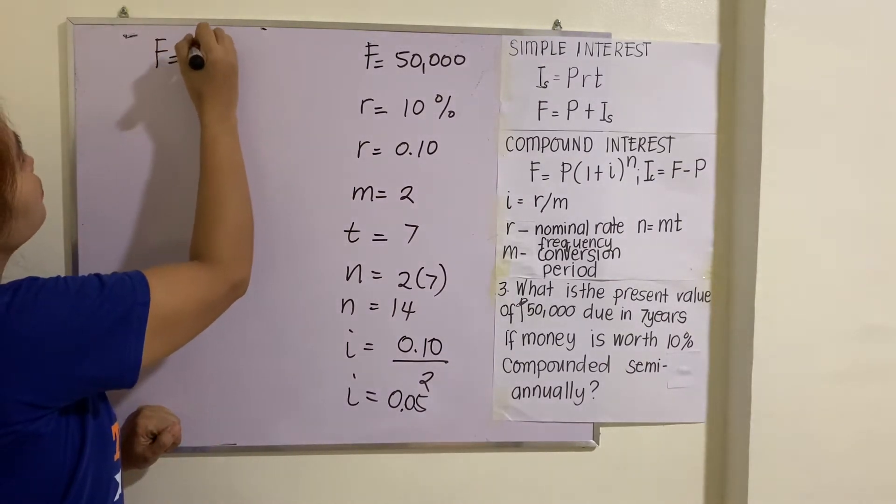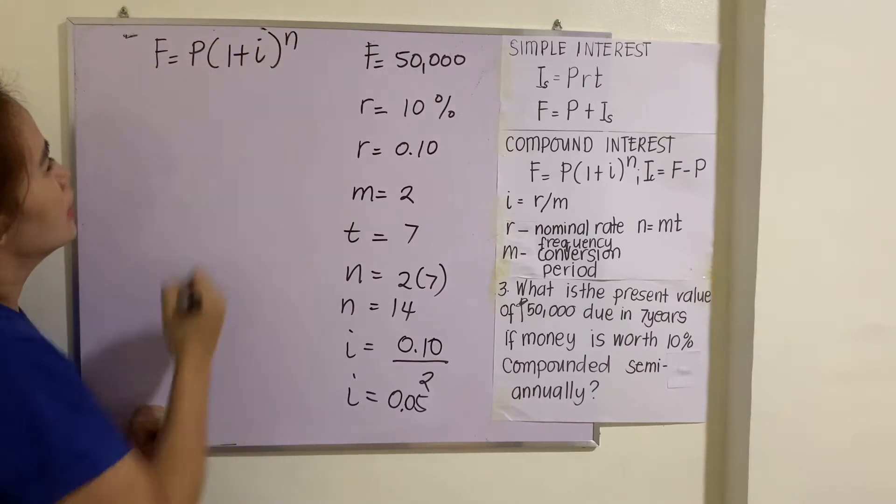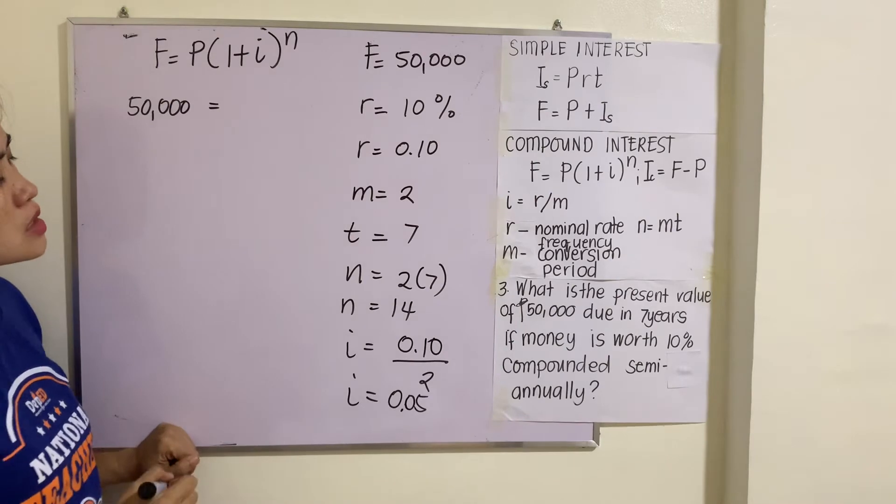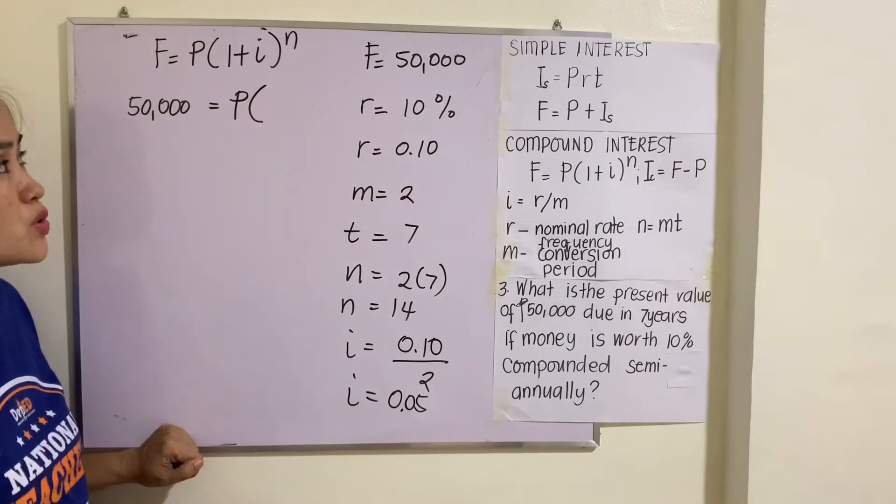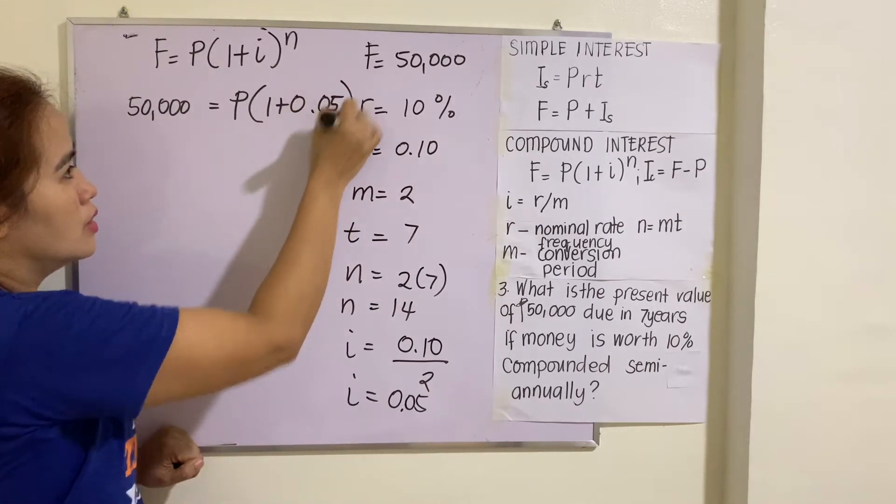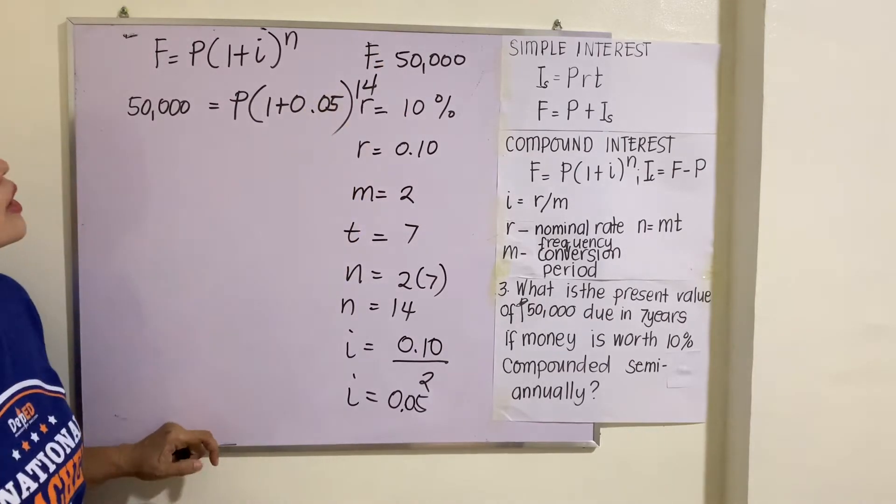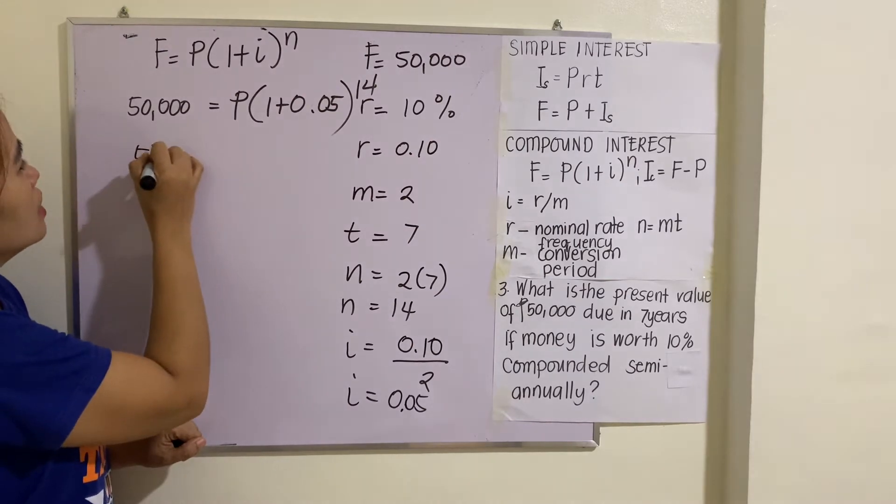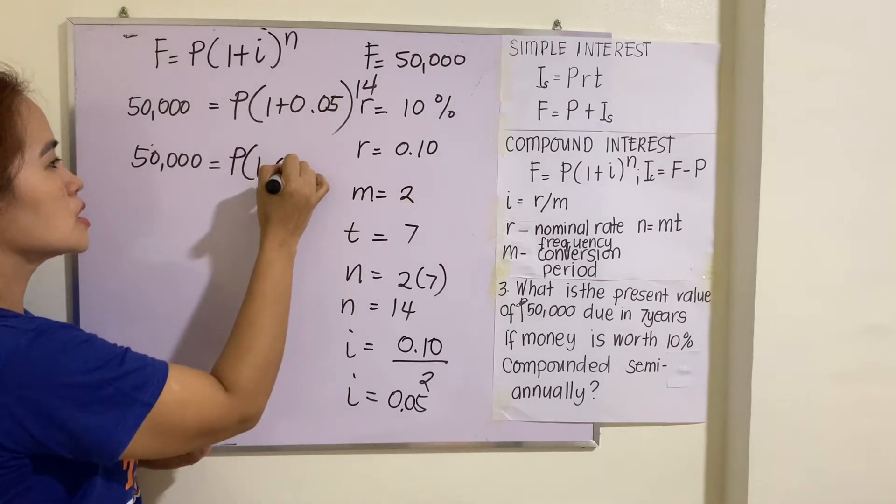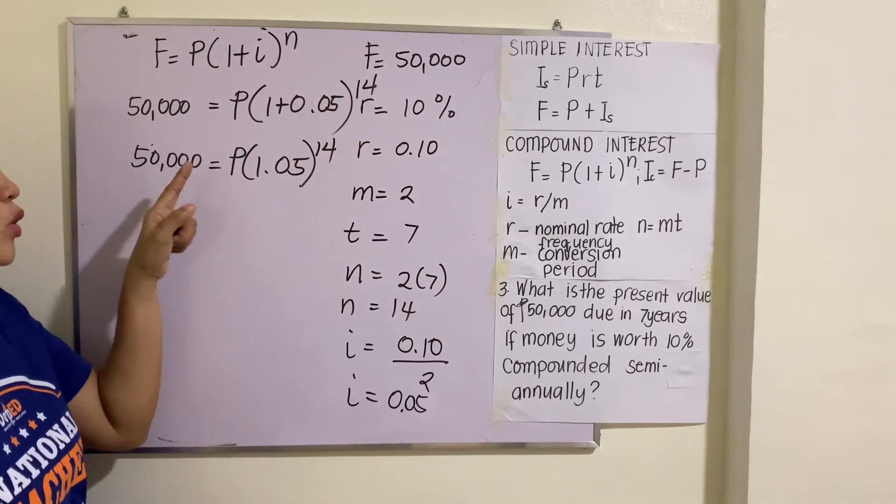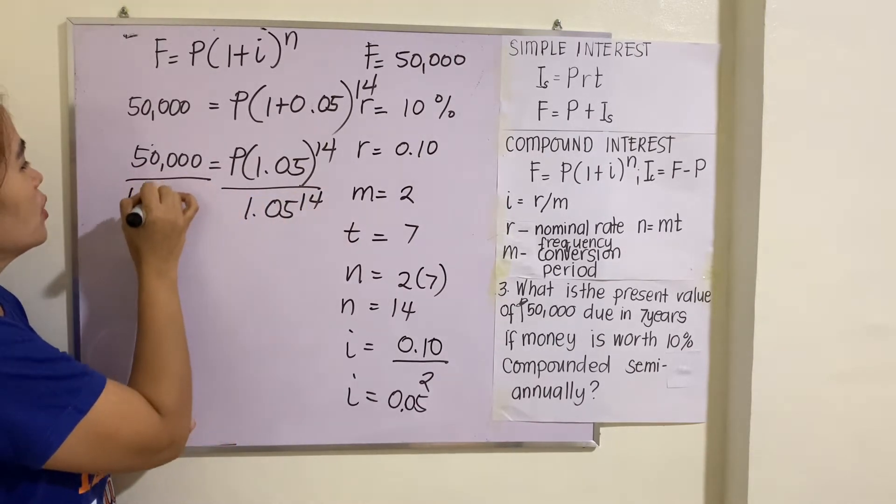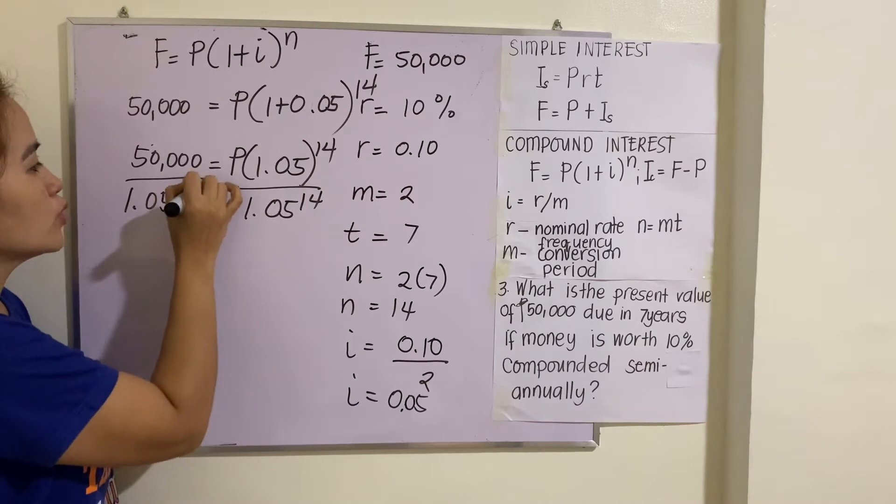Now, the formula is F = P(1 + I)^n. Let's substitute now the given. This is 50,000 = P(1 + 0.05)^14. So 50,000 = P(1.05)^14. How do we solve for P? You divide both by 1.05^14.